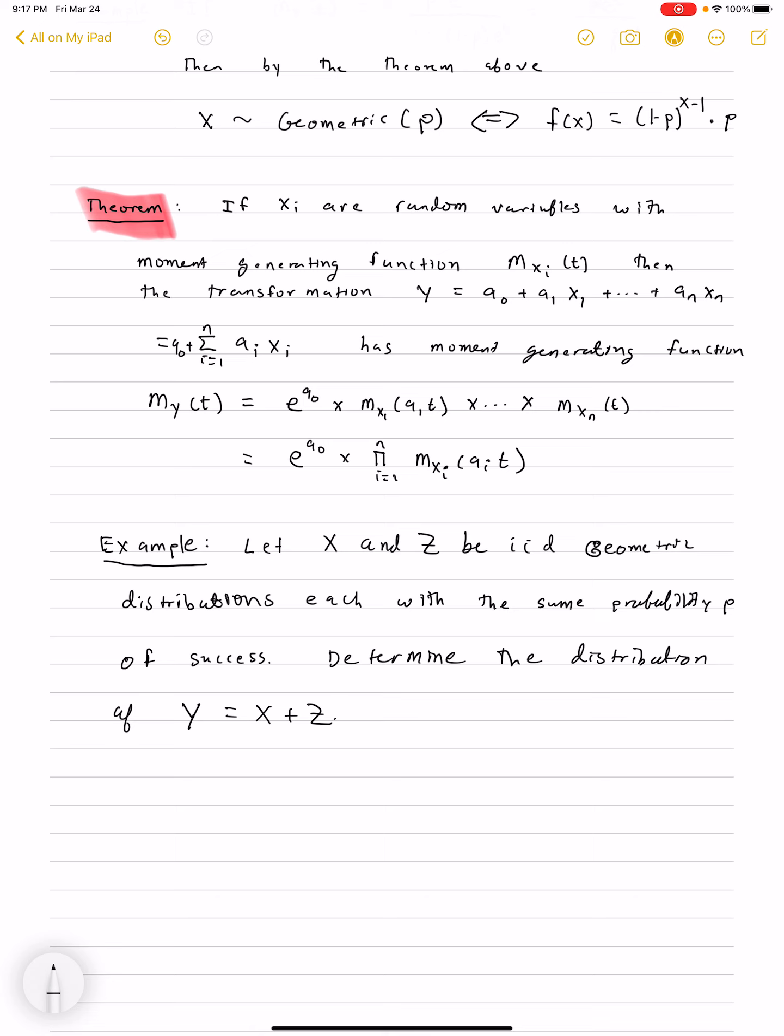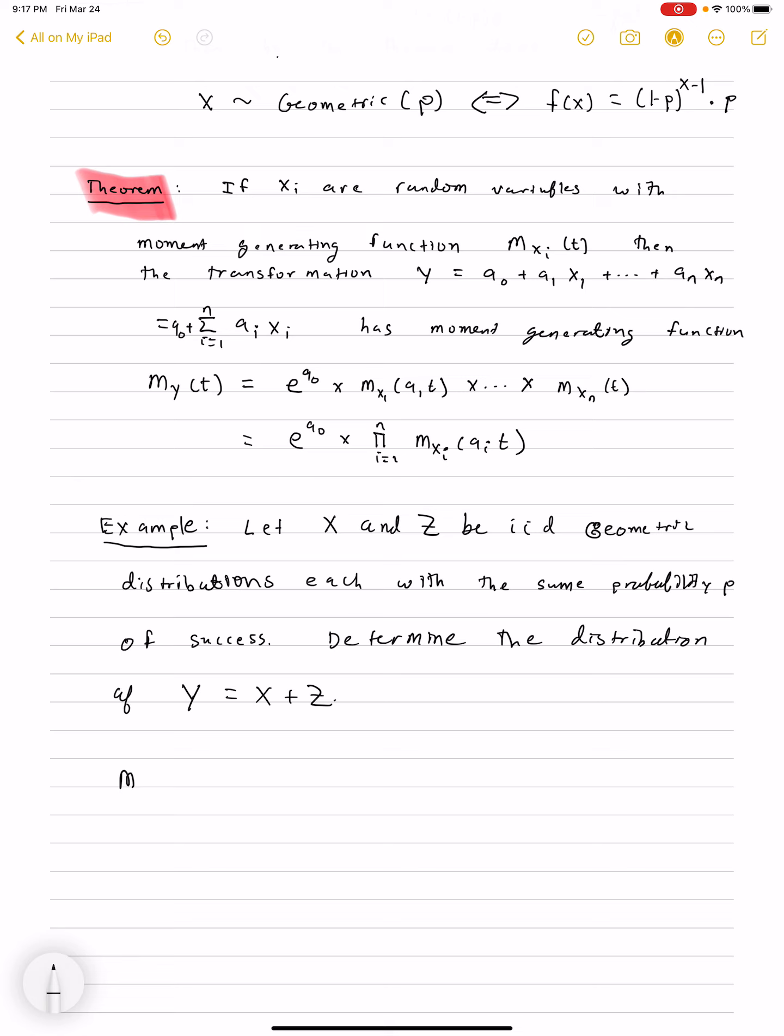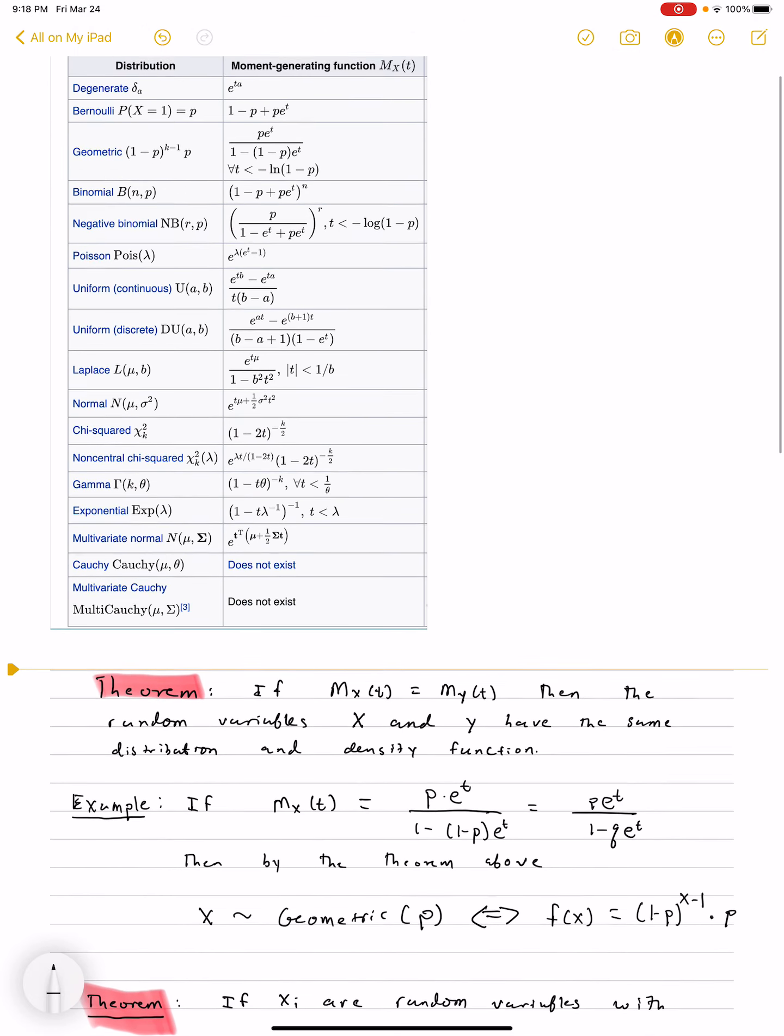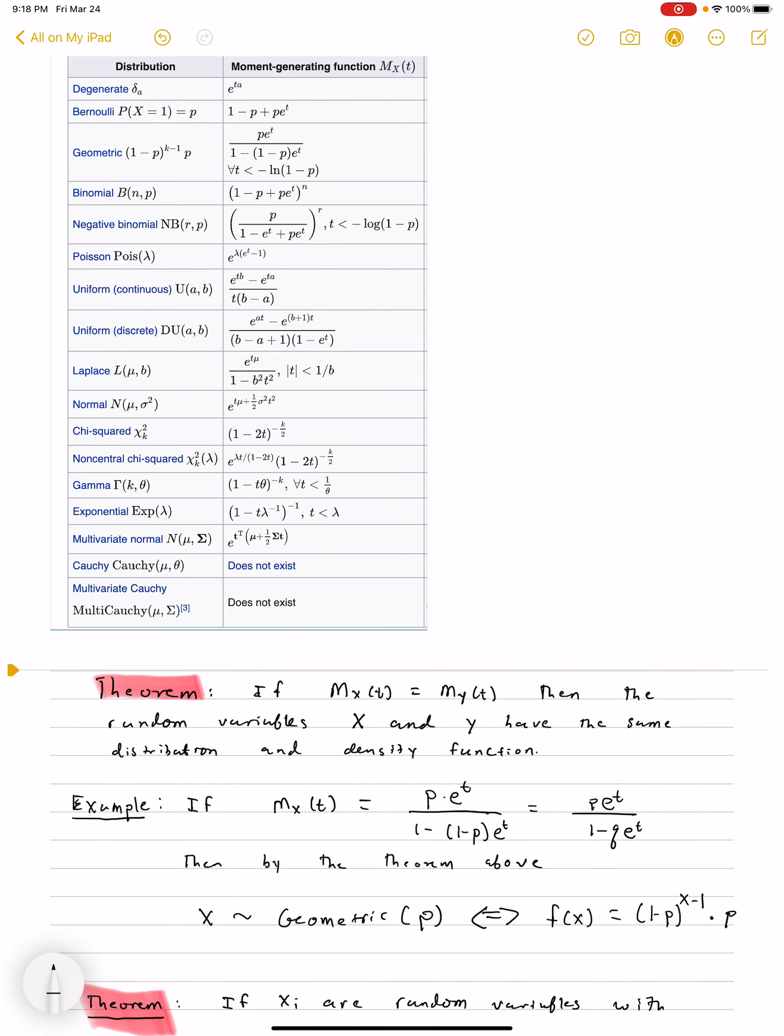We're going to use this theorem, and this theorem is going to tell us M_Y(t) is going to be M_X(t) multiplied by M_Z(t). Since each of these have a geometric distribution, they have a geometric moment generating function. So we go all the way back up to this list, the geometric has p e^t times 1 minus q e^t as the moment generating function.